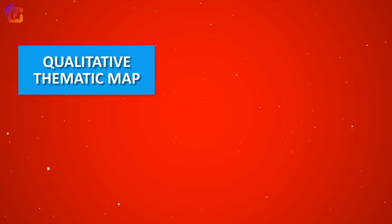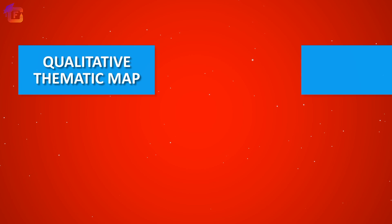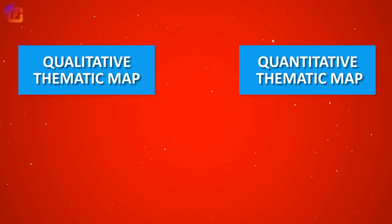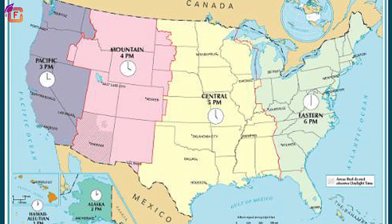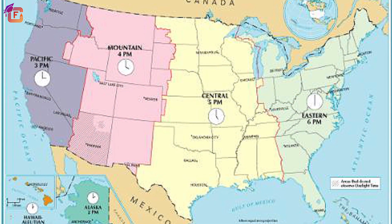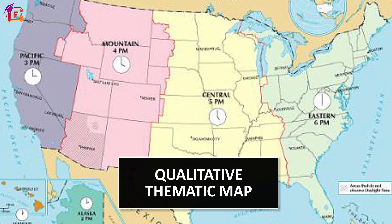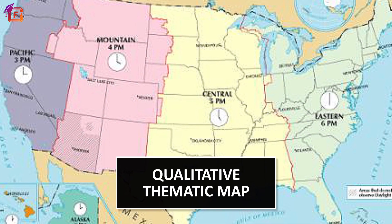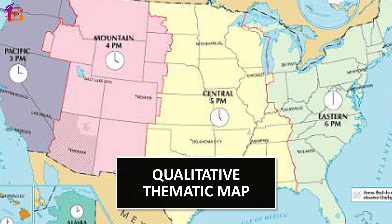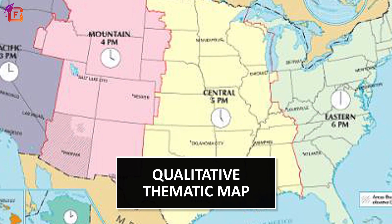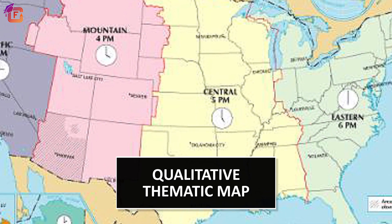There are two types of thematic maps. One type is known as the qualitative thematic map and the other is known as the quantitative thematic map. The nominal data is represented by qualitative thematic maps, which focus on the distribution of that nominal information.